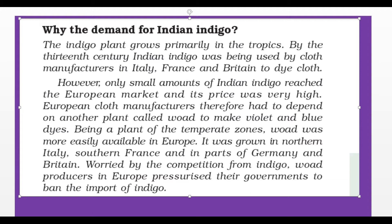In the last video session, we discussed about the Indigo plant — the crop for Europe. Indigo was used as a plant to color clothes. Manchester city, that is in England, was the center of cotton textile industries.